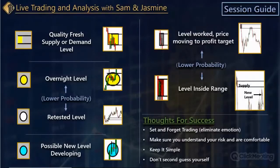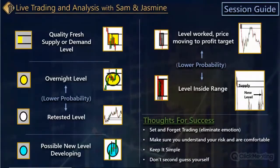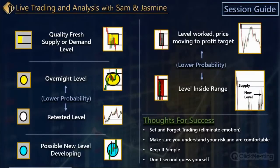How many times have you seen two levels that look identical — same number of candles, same everything — and one works great and the other one doesn't work at all? Why is that? It's normally because of location. That's the reason for color coding the things you see here.